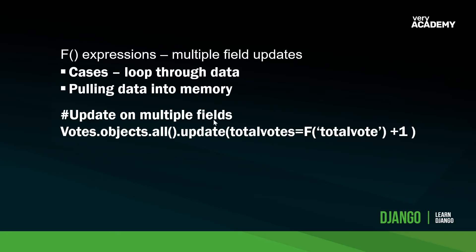For example, when we're looping through data and creating changes in the database, this is ultimately going to be a lot quicker than pulling data out of the database, performing the operation, and then returning the data. Using F expressions we can loop through the data and update it from the database back end. So here we have votes.objects.all() and then we run the update with total_votes plus one — an example of utilizing F expressions on multiple instances.